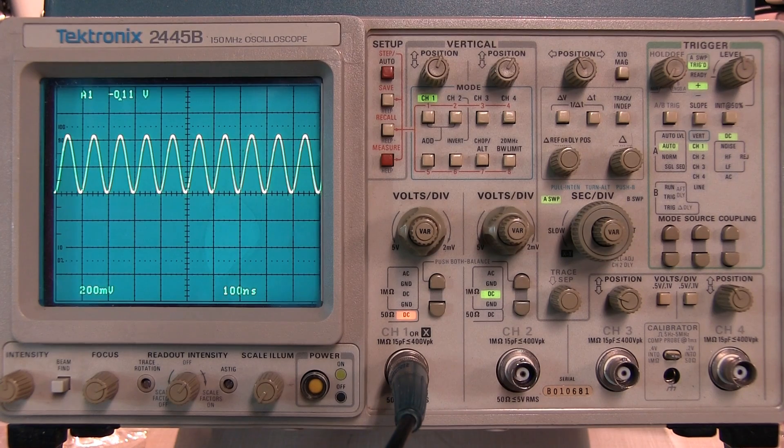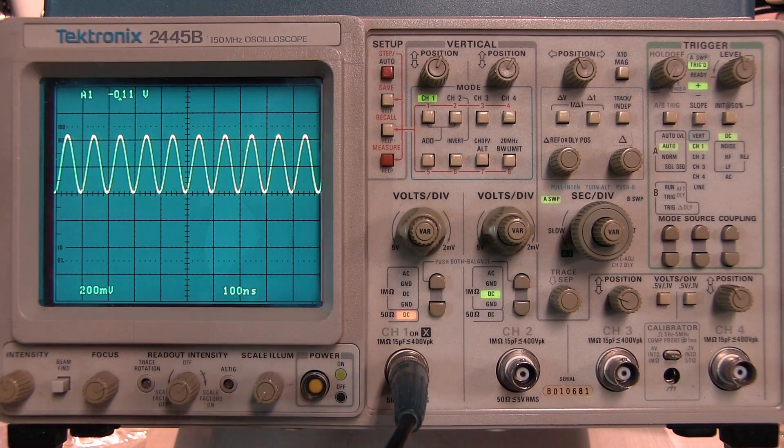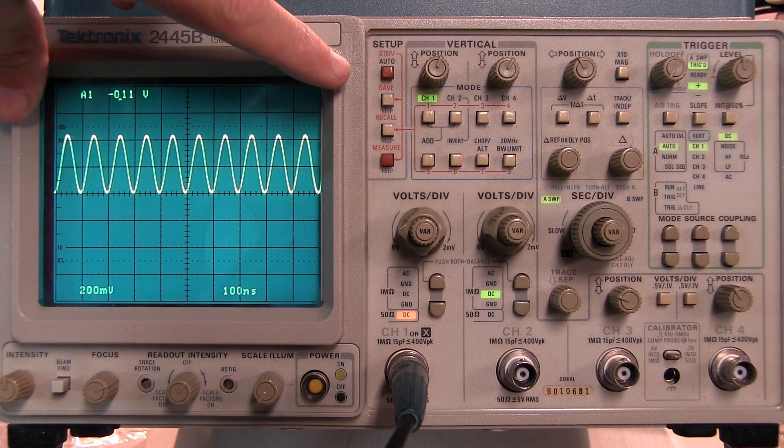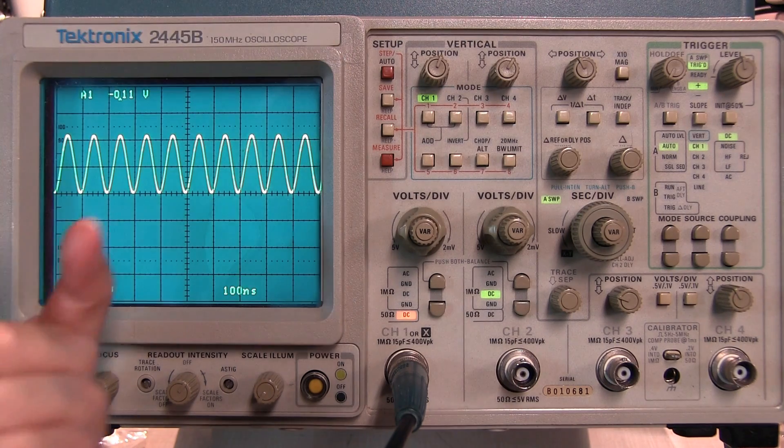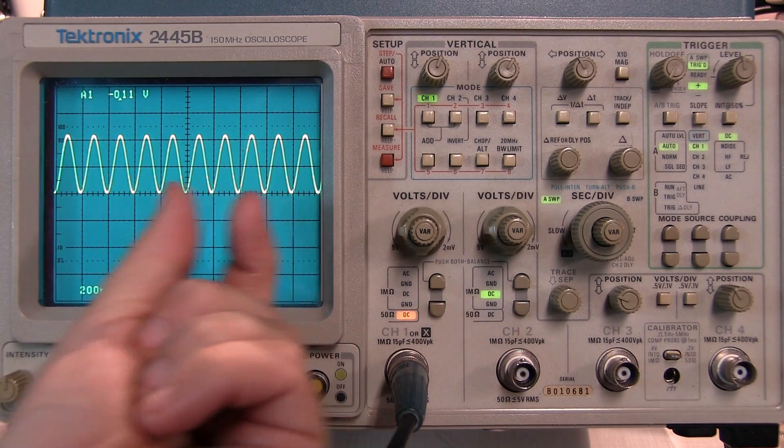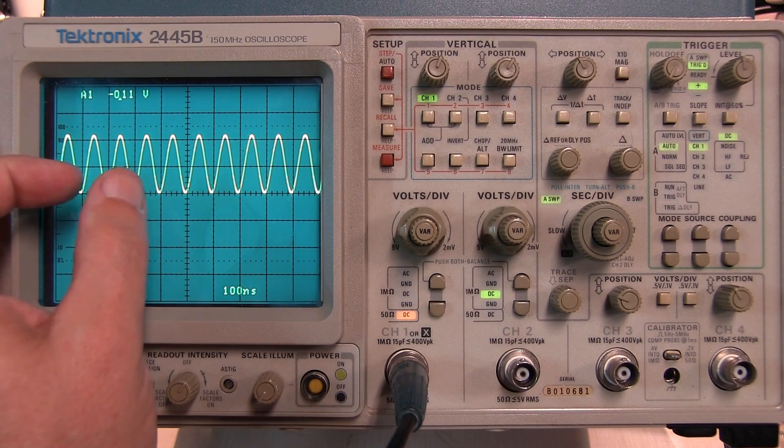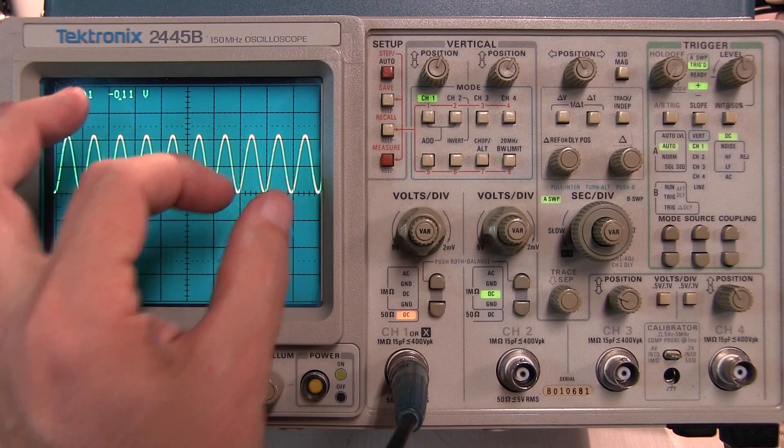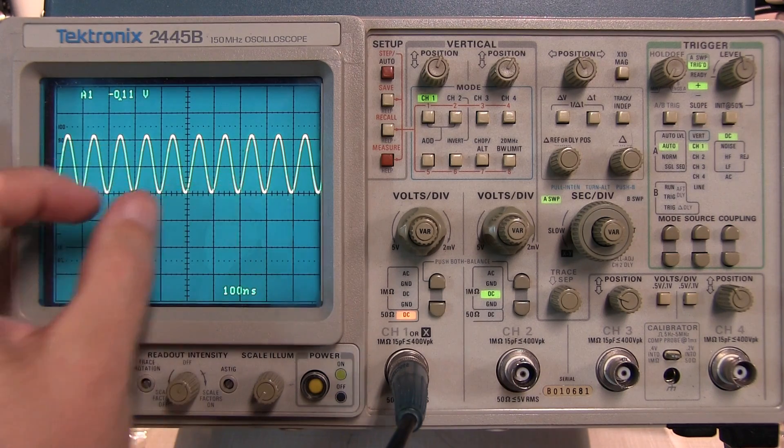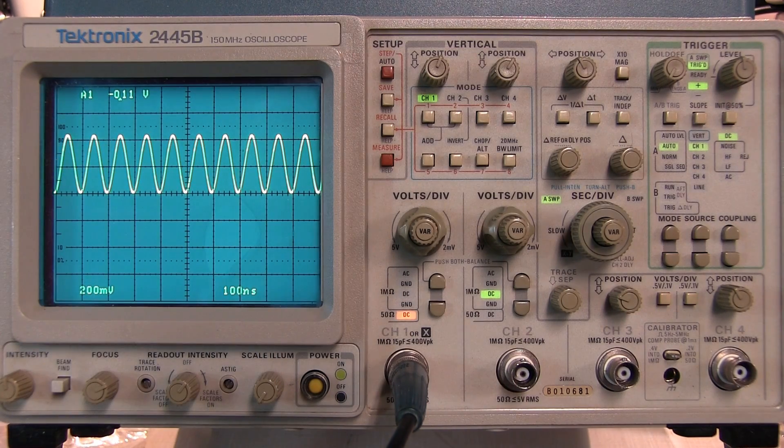The delayed time base has a number of uses. It allows us to view a waveform at a relatively slow sweep speed and then zoom in on an area or two of that waveform anywhere within the display. You might do this to gain greater detail of what the waveform looks like in a particular area or even to make timing measurements between a couple of areas on the waveform.